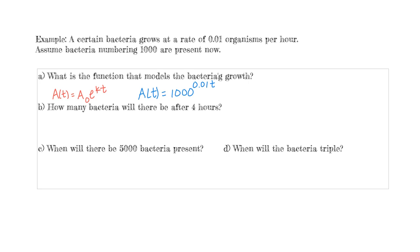For part B, it asks how many bacteria there will be after four hours. We're looking for A of 4, so that's 1000 times E to the 0.01 times 4. When we plug that into a calculator we get 1040.81 bacteria. So if we started with 1000 bacteria, in four hours we grow to about 1041, meaning it took roughly four hours to grow 42 bacteria.